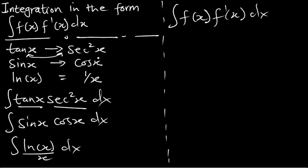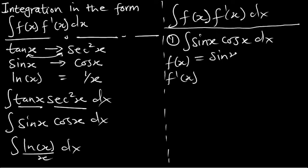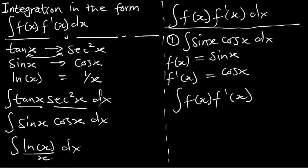Let's solve some examples. Take integral of sin(x)·cos(x) dx. What is f(x) and what is f'(x)? Among these, which one is the derivative of the other? We know that if you differentiate sin(x) you are directly going to get cos(x). So the original function is sin(x) and the derivative is cos(x). This question falls within the range f(x)·f'(x), so we can apply the rule.